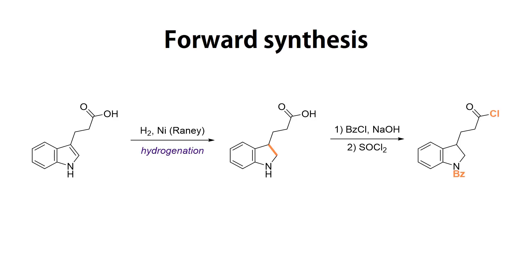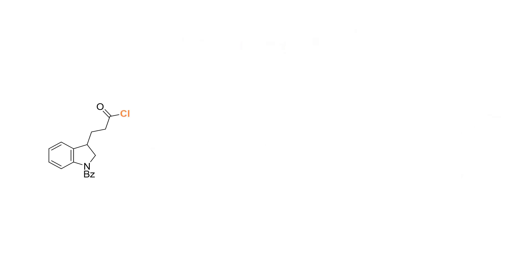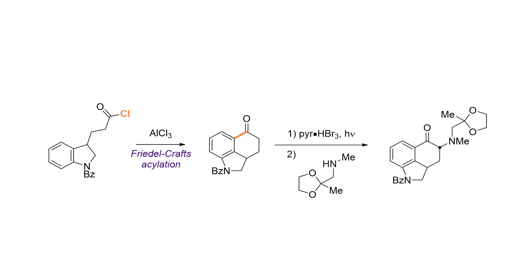The Lilly-Woodward synthesis commenced with partial hydrogenation of the starting material with Raney nickel to afford the dihydroindole system, for the purpose we outlined at the beginning. Next, the dihydroindole nitrogen was protected as the benzoyl amide and the acid converted to the acyl chloride. This set the stage for the first key reaction: the Friedel-Crafts acylation with aluminum chloride as a Lewis acid.